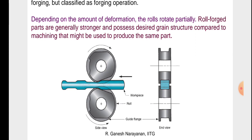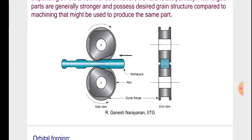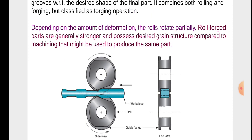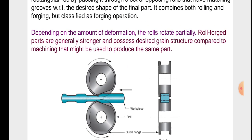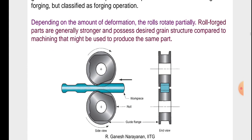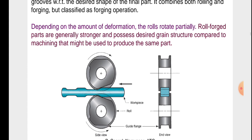Roll forged parts are generally stronger and possess desired grain structure compared to machining that might be used to produce the same part. In the figure, we will see the roll forging process in which two rollers are shown rotating opposite to each other. The workpiece is guided by a guide planche. The end view and side view of the roll forging setup are shown.